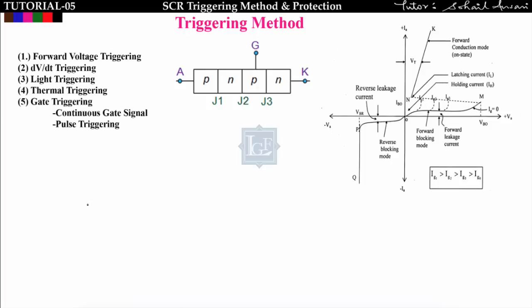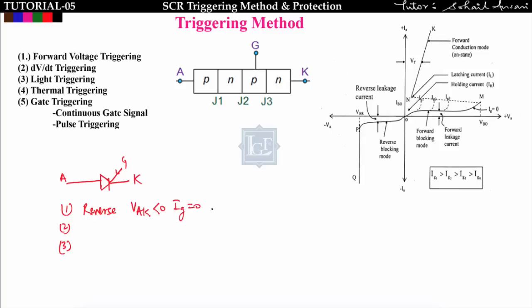Hi guys, welcome to lecture number five. In the previous lecture we have seen the construction, working, and IV characteristics of SCR, that is the silicon controlled rectifier. It is a three terminal device having four layers. We have seen three modes of SCR. The first one is the reverse blocking mode, in which we are supplying VAK less than 0 and not giving gate current, so in this case SCR behaves like a power diode in reverse bias condition.